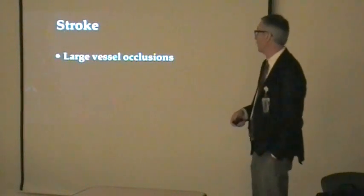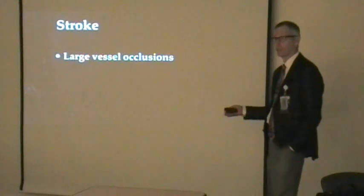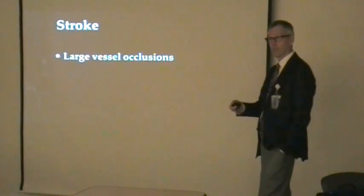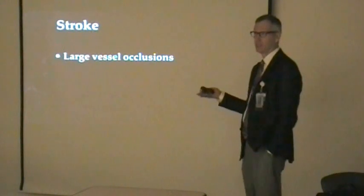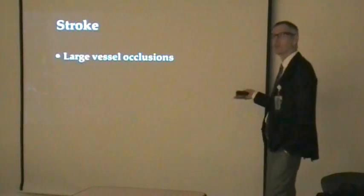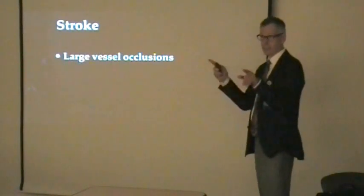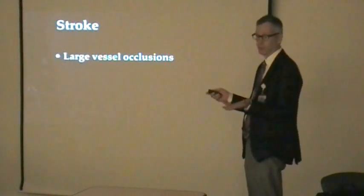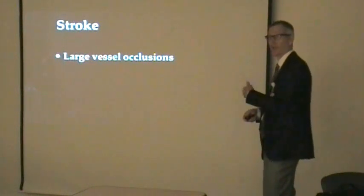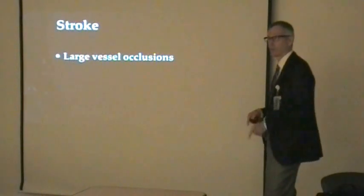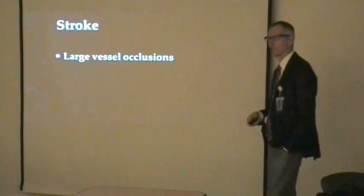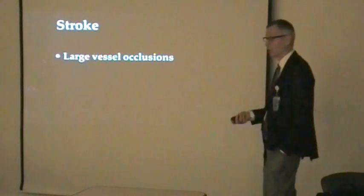For stroke, we're treating large vessel occlusions — not small perforating or hypertensive strokes. Typically, to qualify for intervention, patients need an NIH stroke scale score of six or greater within six hours of onset. We also use a CT scan score of 0-10 for injury extent, and a score above six means not much stroke on CT. This creates a kind of 6-6-6 rule for ideal candidates for acute intervention.